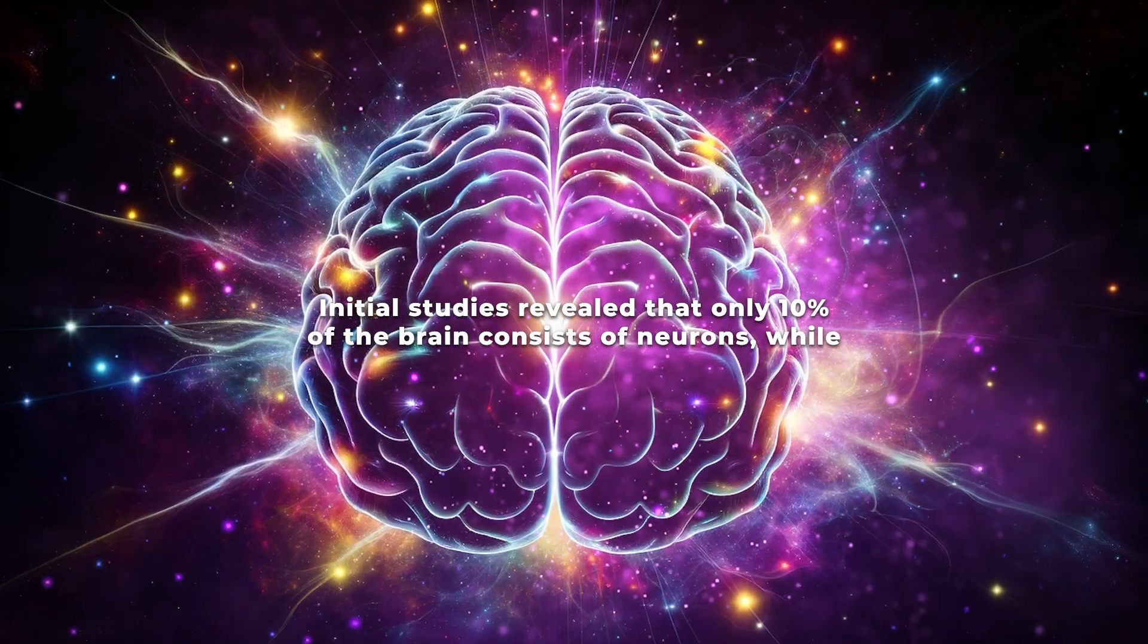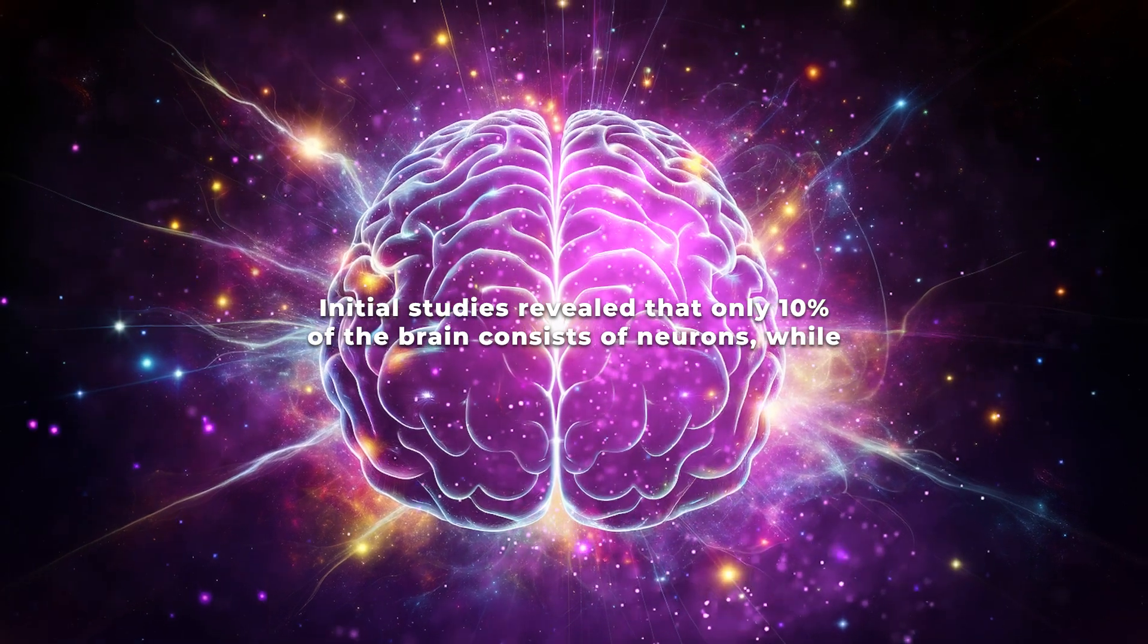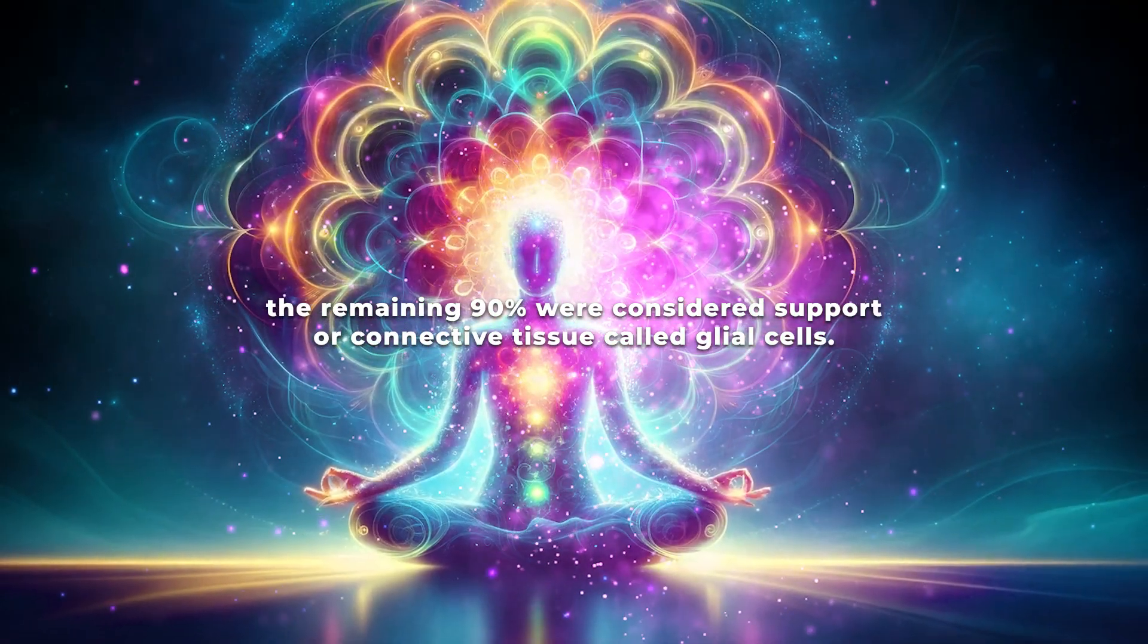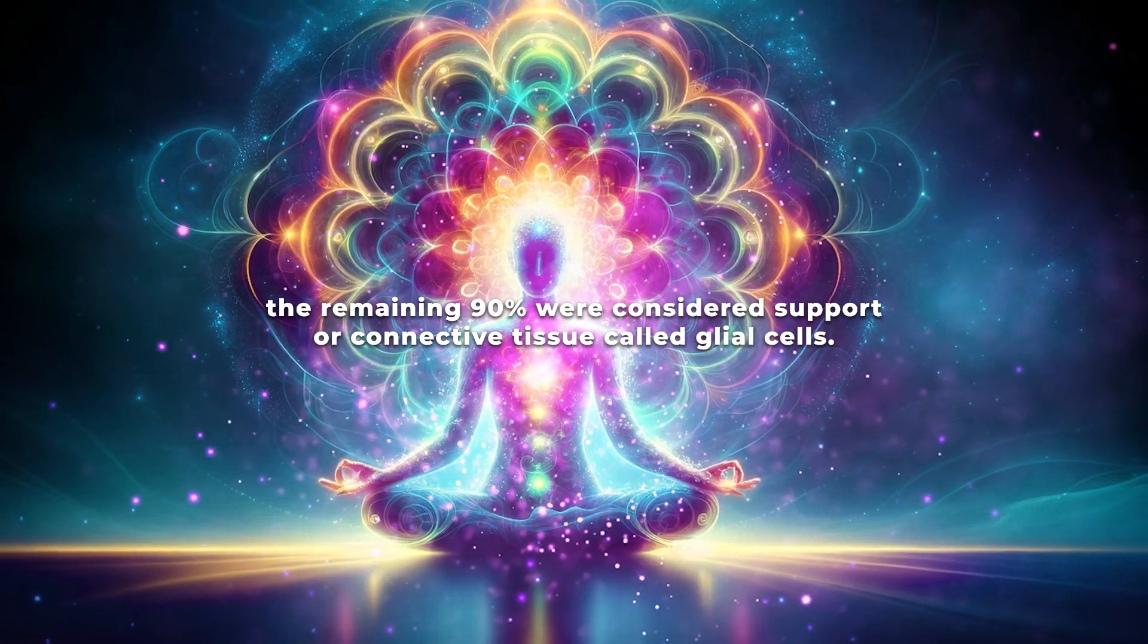Initial studies revealed that only 10% of the brain consists of neurons, while the remaining 90% were considered support or connective tissue, called glial cells.